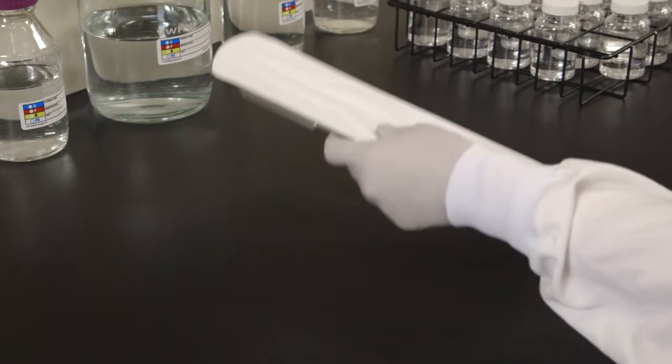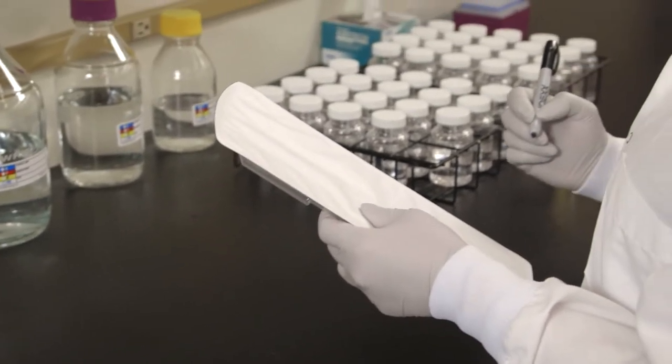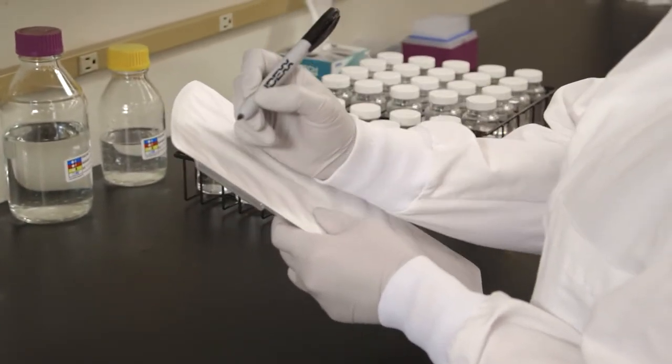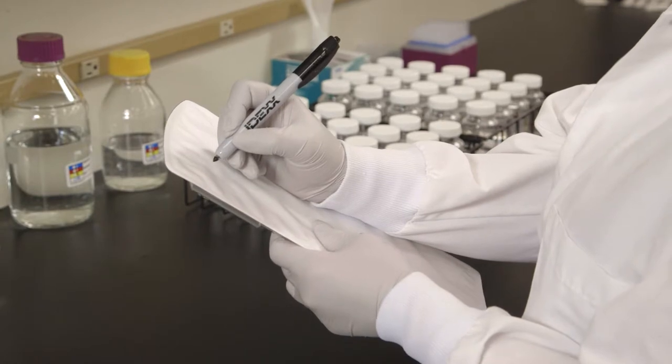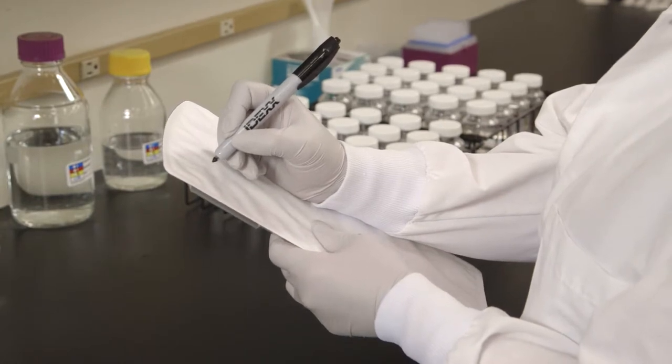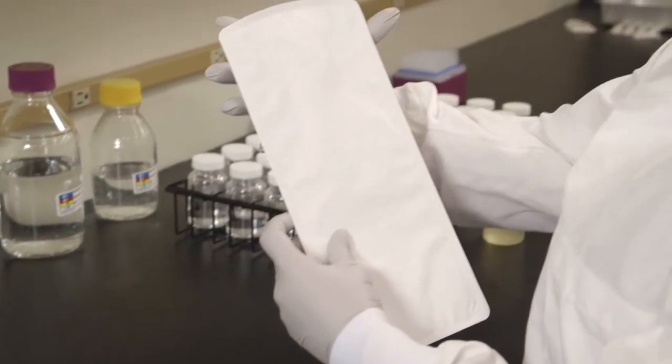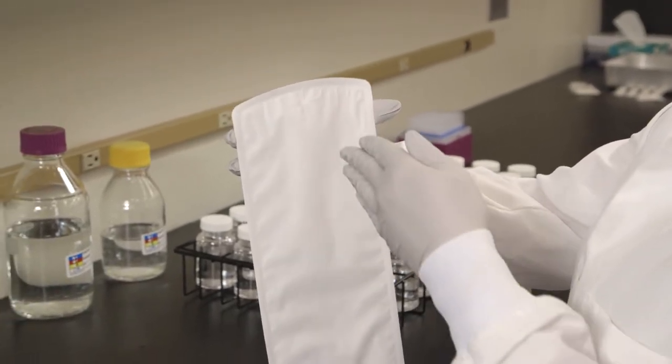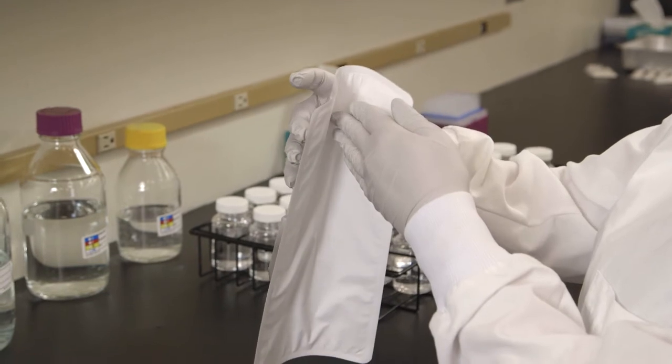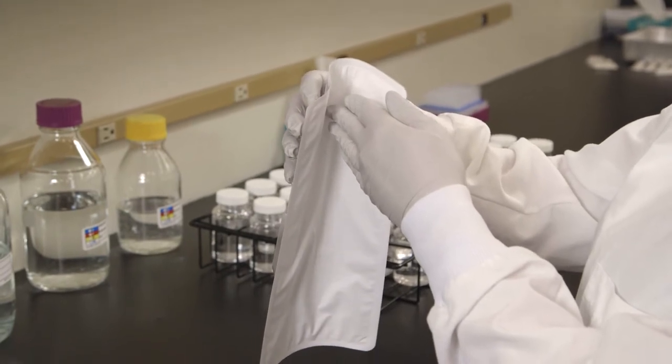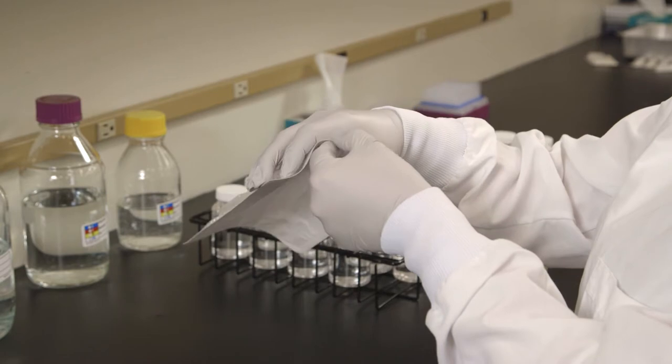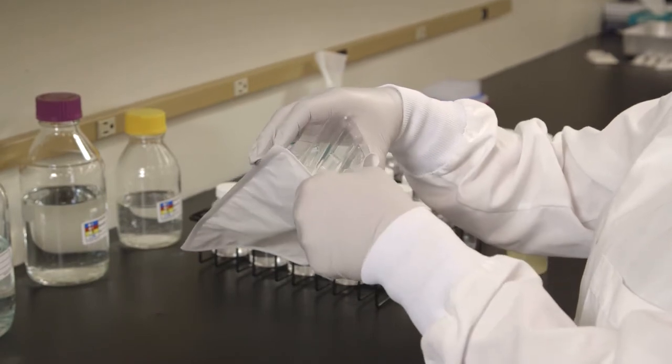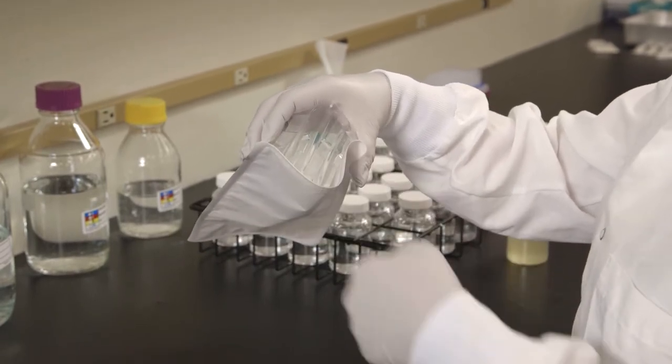Use only a permanent felt tip marker to label the Quantitray LEG-ALERT tray. Adhesive labels may adhere to the sealer roller and ballpoint pens may puncture the paper. Hold the tray at the top with the well side facing your palm. Push the top edge of the tray in with your free hand while squeezing the tray into a circle. Open the tray by pulling the back away from the well side. Avoid touching the inside of the tray.